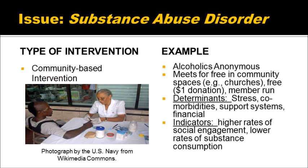Next, let's consider an example of a community-based intervention. For substance abuse disorder, a good example is Alcoholics Anonymous. This meets for free in community spaces such as churches, and members can make a $1 donation. It is also run by members. The determinants that this could affect are stress, comorbidities, support systems, and financial determinants. Indicators that could be affected are higher rates of social engagement and lower rates of substance consumption.